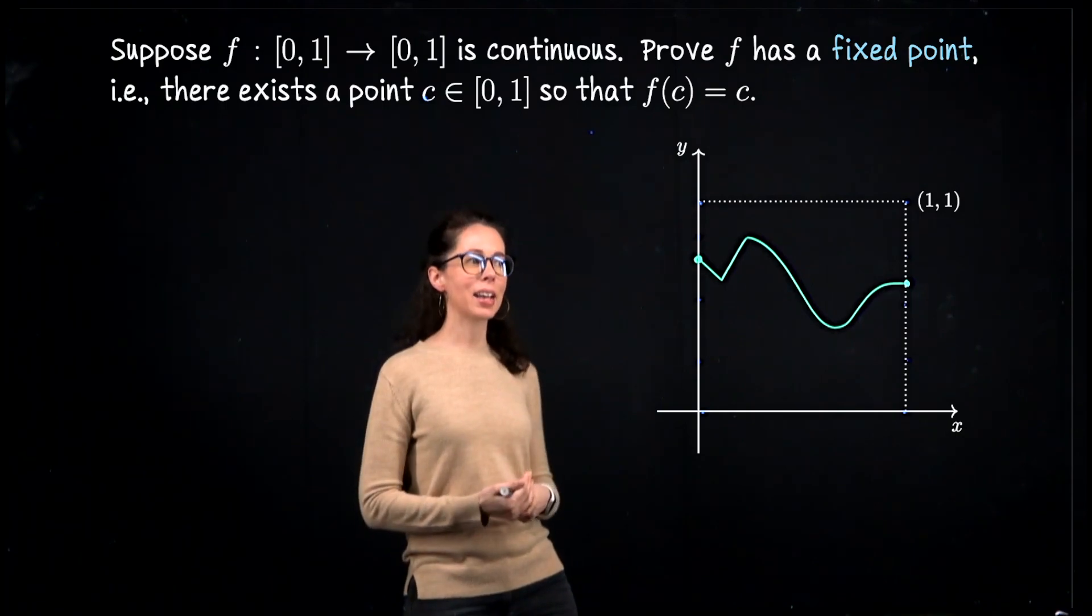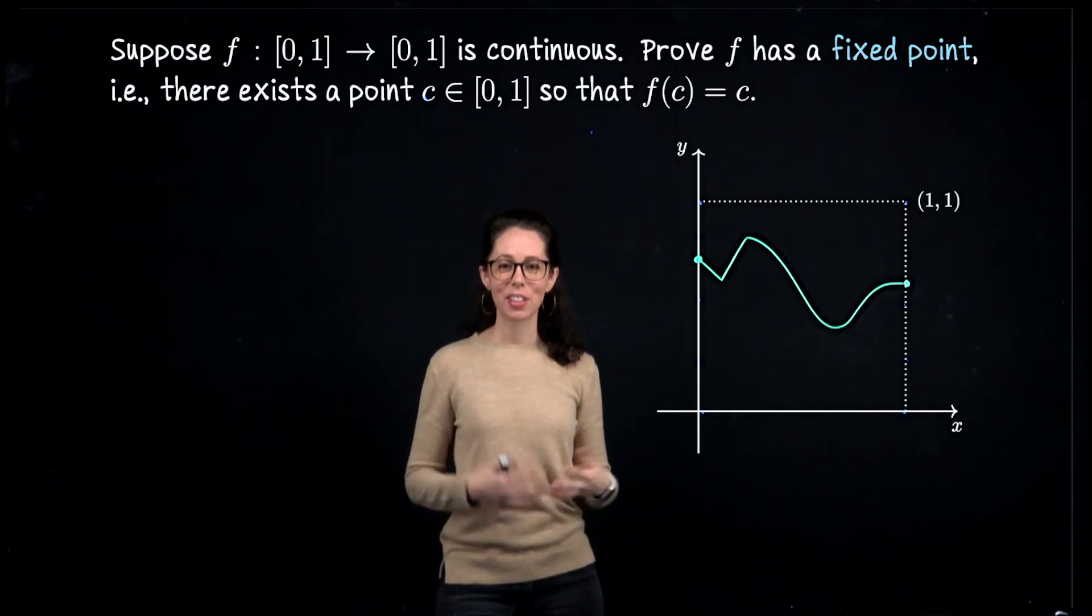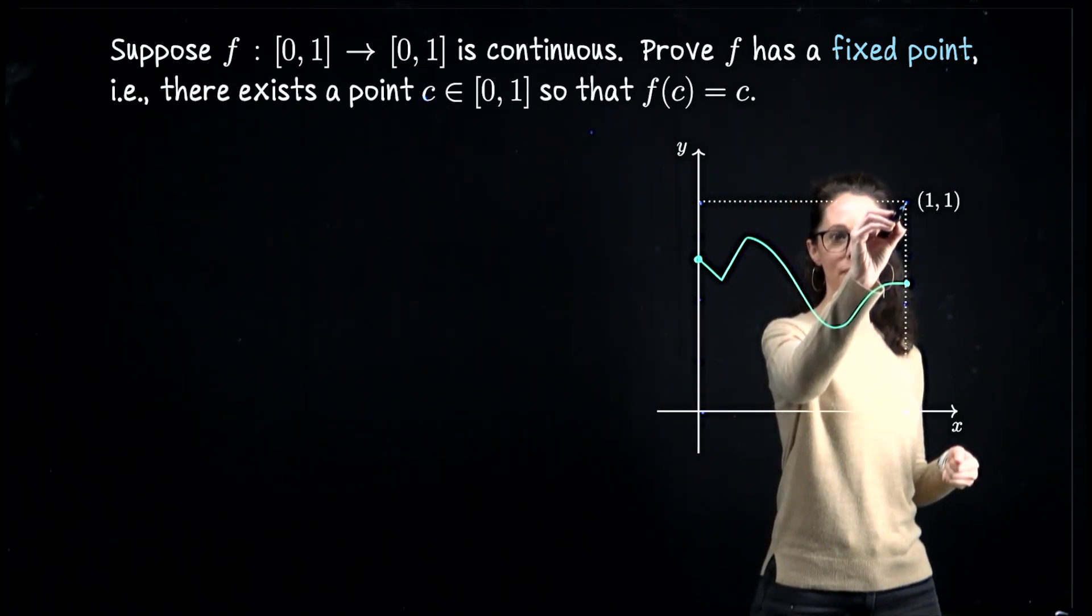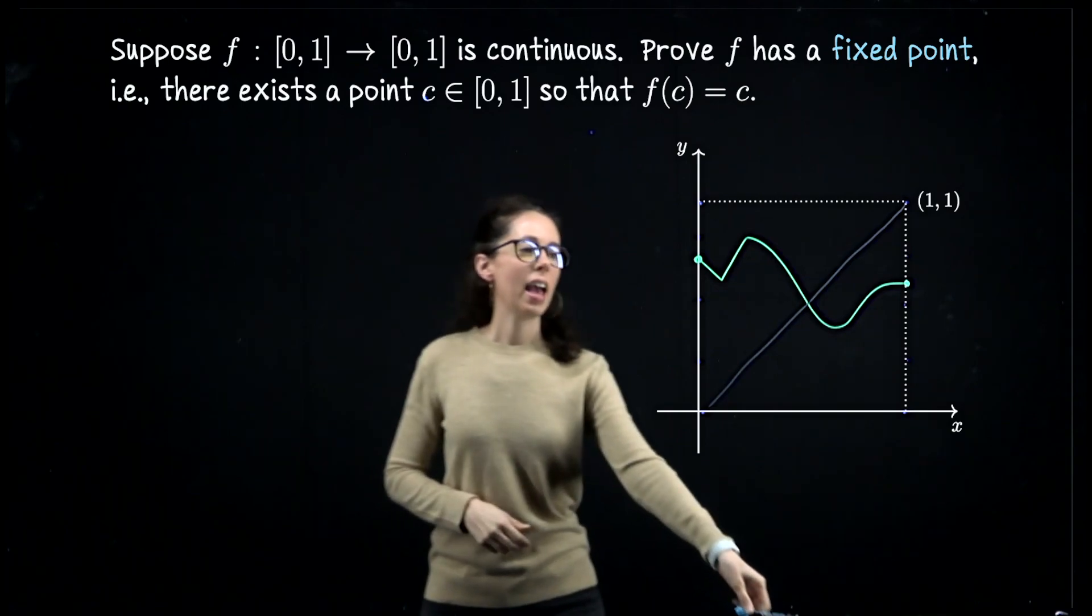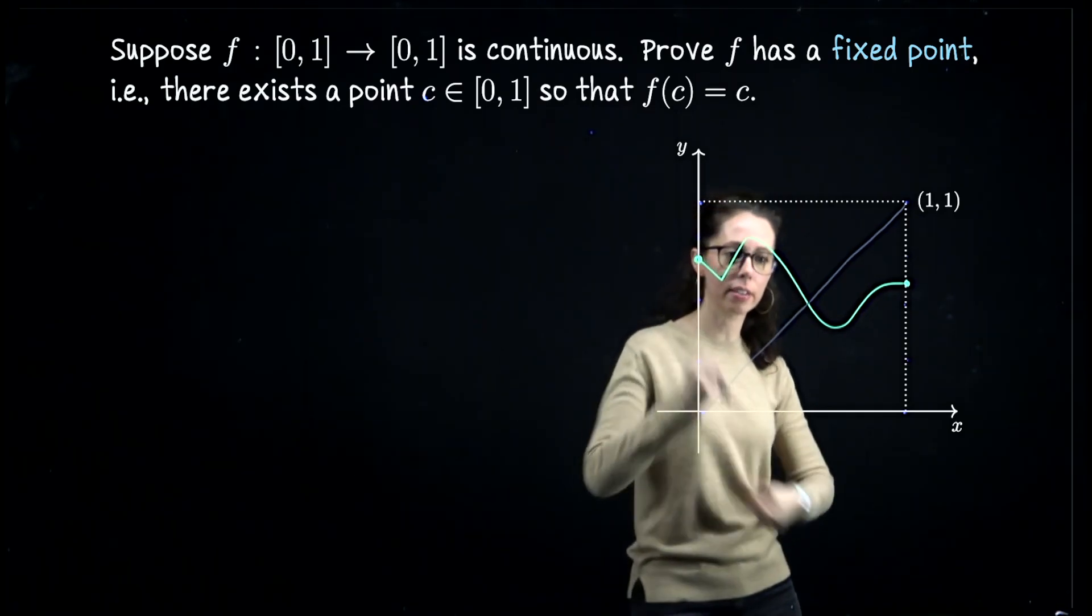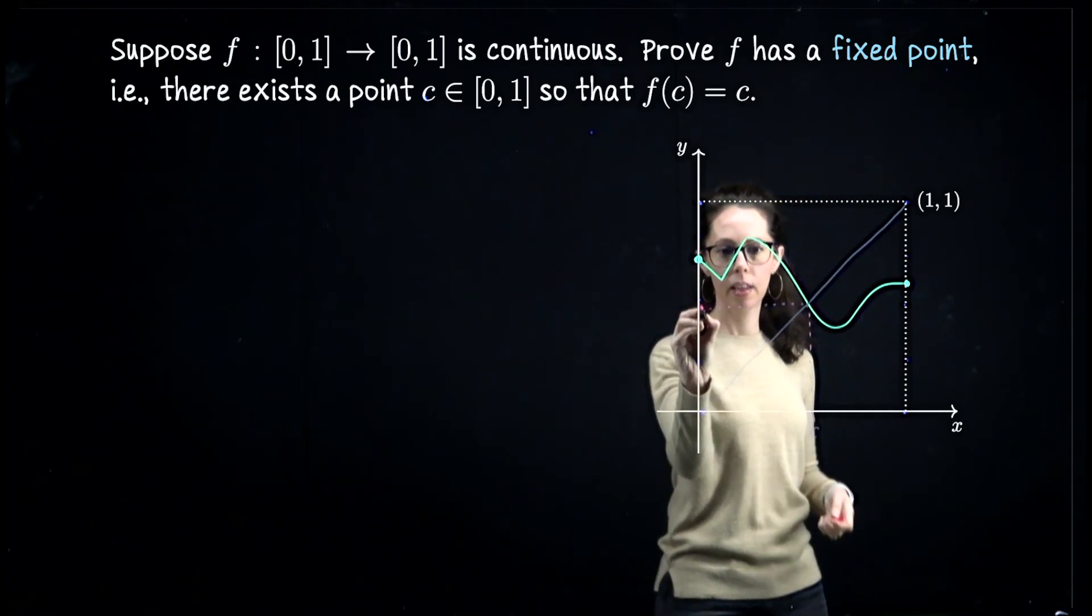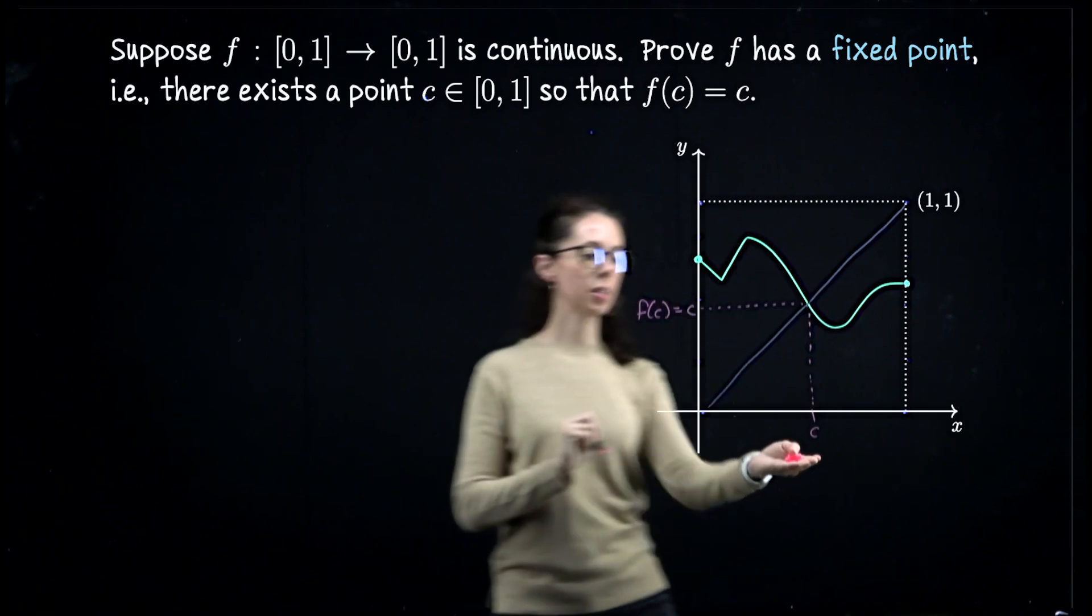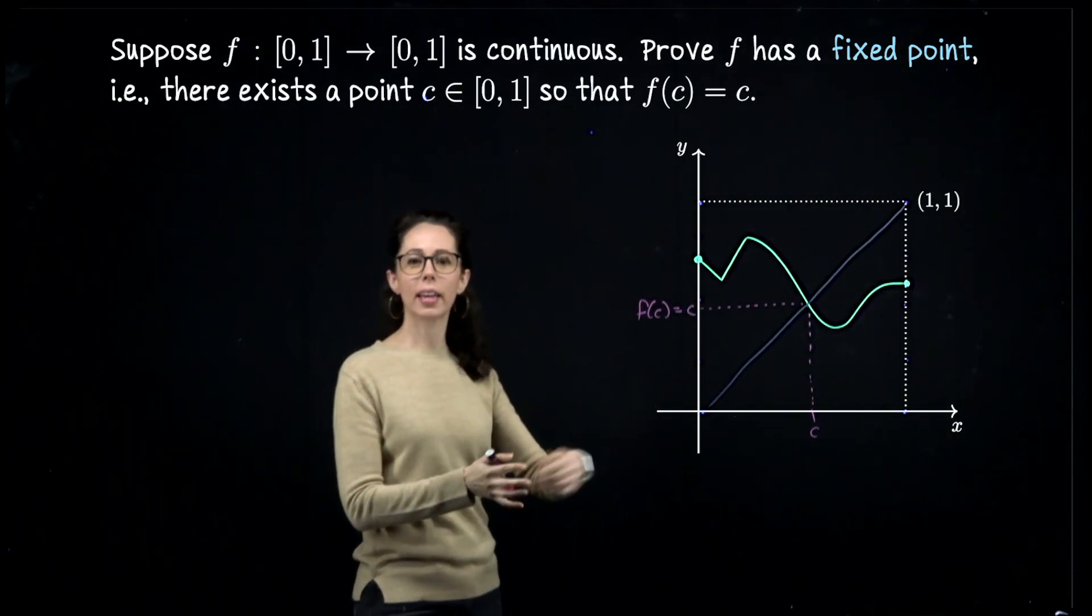What I'm hoping you realized is that the line y = x that connects this corner to that one is a line of fixed points, so the function f(x) = x fixes every input. Anytime a continuous function intersects the line y = x, it intersects at a fixed point. So for this particular function, because y = x, we can say f(c) = c for this particular input.